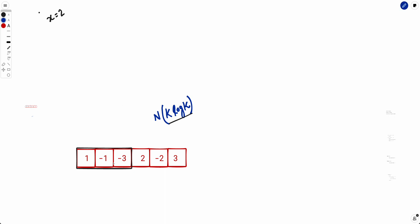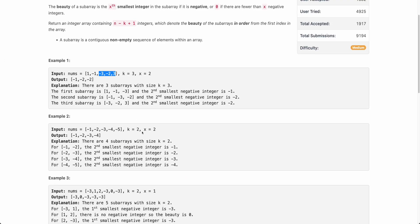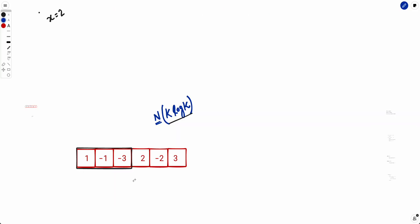Now how to solve this? In the brute force approach, for each subarray of size k, you sort the subarray and find the xth smallest element. Sorting takes O(k log k) time, and since there are roughly n subarrays, the total complexity is O(n · k log k). Since both n and k can be up to 10^5, this will not pass. We need to optimize.